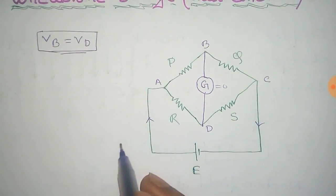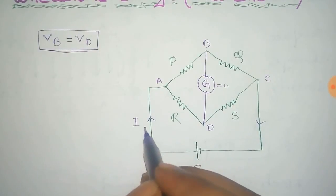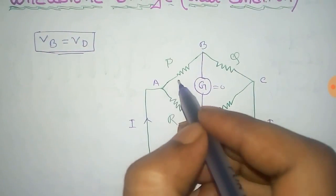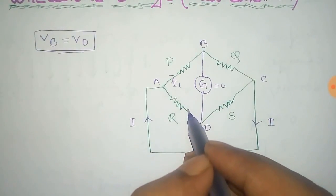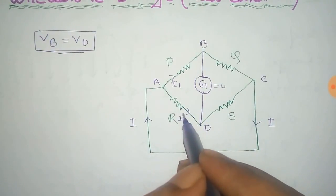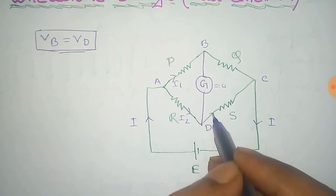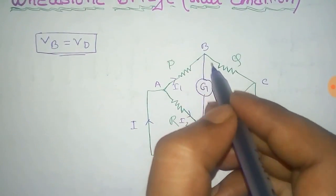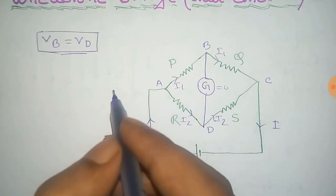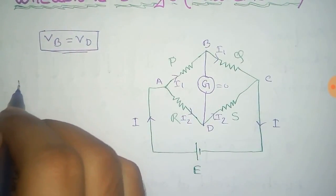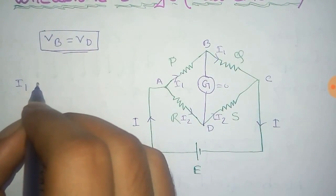Now, this is the total current I. Then this current divides in two parts, that is I1 and I2 in P and R resistances. This could also be I2 and this also be I1 because there is no current through the galvanometer.